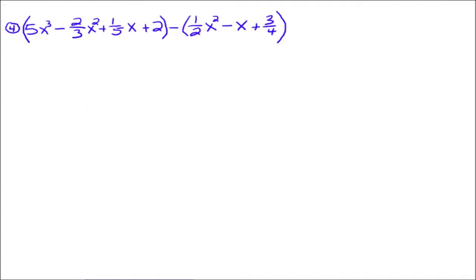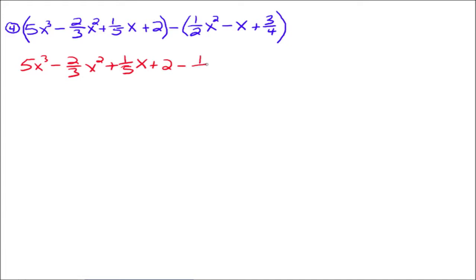Let's do one more. The first polynomial we can just leave alone and drop the parentheses: 5x cubed minus 2 thirds x squared plus 1 fifth x plus 2. Now we're going to distribute this negative 1 — remember, there's a negative 1 in front here. Negative 1 times 1 half x squared goes to negative 1 half x squared.